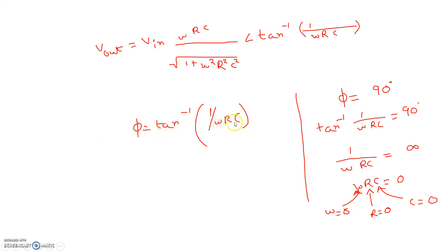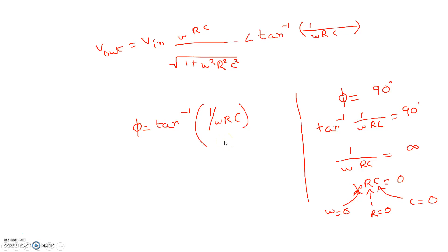Now, what is the range of φ? Since ω, R, and C are all positive quantities, ωRC ranges from zero to infinity. When ωRC → 0, 1/ωRC → ∞, and tan⁻¹(∞) = 90°. When ωRC → ∞, 1/ωRC → 0, and tan⁻¹(0) = 0°. So φ varies between 0° and 90°. This means one RC phase shift network can provide a maximum of 90 degree phase shift — it cannot achieve 180 degrees.